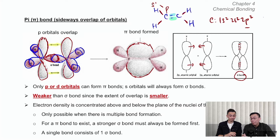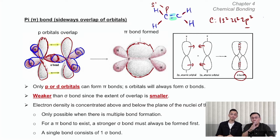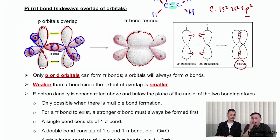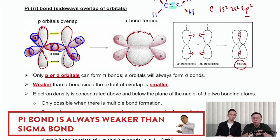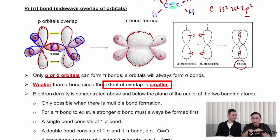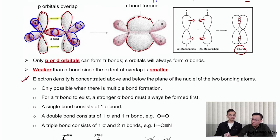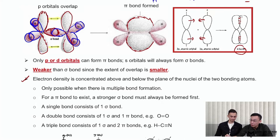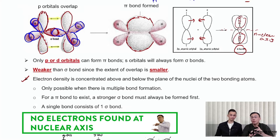To summarize: pi bonds can only be formed by p or d orbitals — you will only see p orbital examples at A-level. S orbitals will always be used to form sigma bonds. A pi bond is always weaker than a sigma bond because the extent of overlap is smaller — a side-on overlap is less effective than a head-on overlap. The electron density of the pi bond is concentrated above and below the nuclear axis, where the nucleus is actually found. That's an important point to take note of.